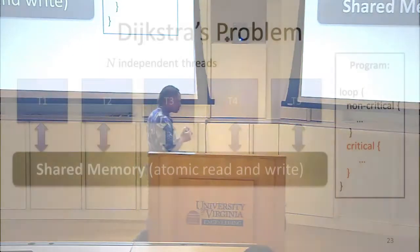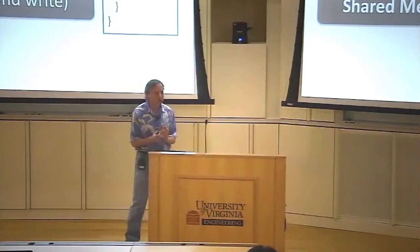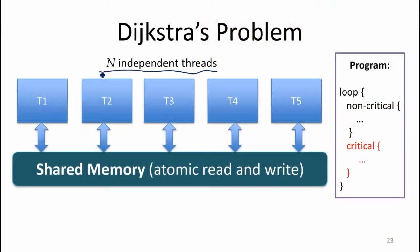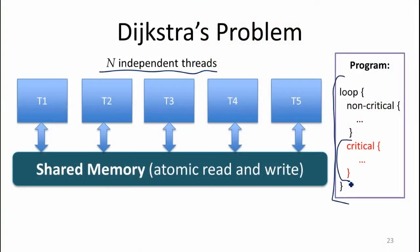Whether we call them threads, processes, or computers — the way Dijkstra was thinking of this, they were separate computers sharing some storage; the way you might think of it today, they're separate processes or threads with shared storage. The important part of this problem is that you've got separate threads of execution with some shared storage between them. Each of them is running a program that contains a critical section, and the requirement is that at most one thread at a time can be inside the critical section. If thread three enters the critical section, no other thread can enter it until thread three is done.